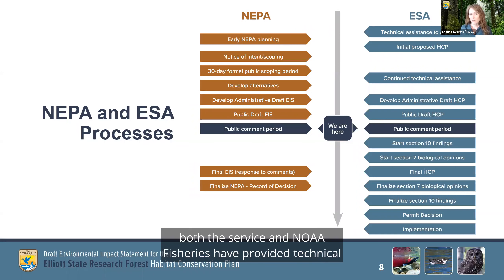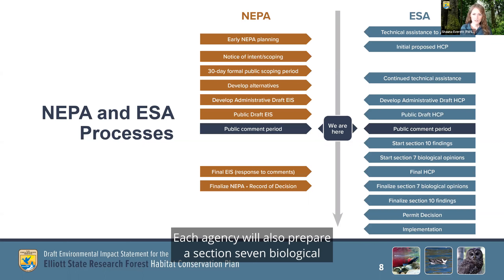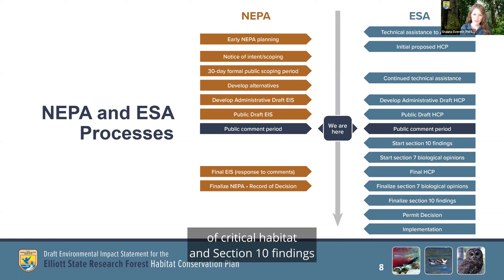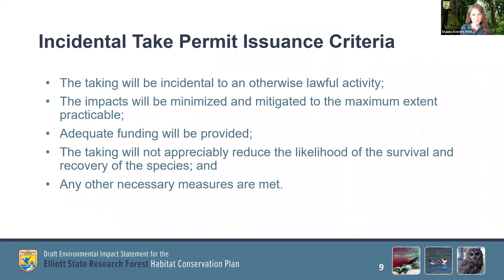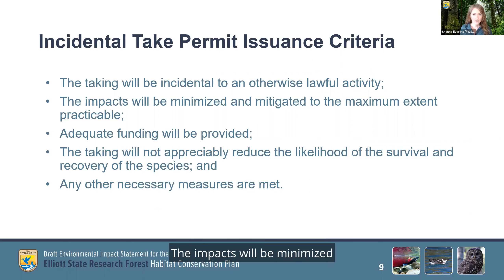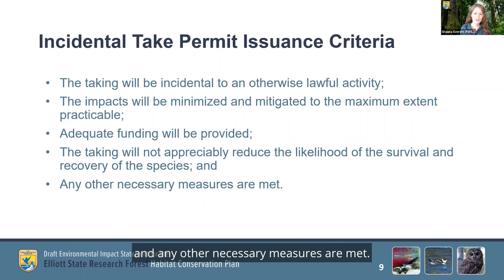On the ESA side, both the Service and NOAA Fisheries have provided technical assistance to DSL in the development of the HCP. Each agency is responsible for making an incidental take permit decision for the listed species under their jurisdiction. Each agency will also prepare a Section 7 biological opinion documenting whether the proposed action would jeopardize the continued existence of the covered species, or result in the destruction or adverse modification of critical habitat, and Section 10 findings documenting whether the HCP satisfies statutory and regulatory requirements. To evaluate whether or not to issue an incidental take permit, the Services must each separately consider the following issuance criteria: the taking will be incidental to an otherwise lawful activity; the impacts will be minimized and mitigated to the maximum extent practical; adequate funding will be provided; the taking will not appreciably reduce the likelihood of the survival and recovery of the species; and any other necessary measures are met.